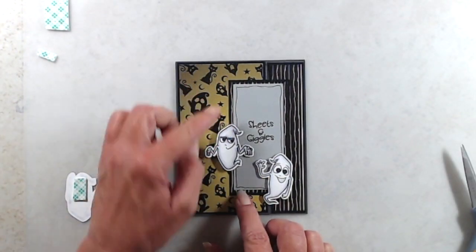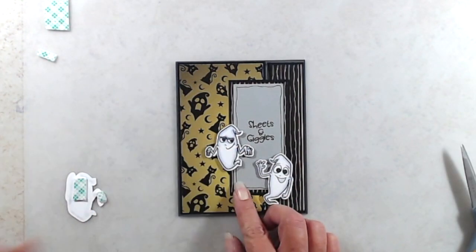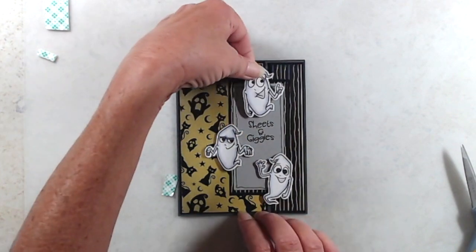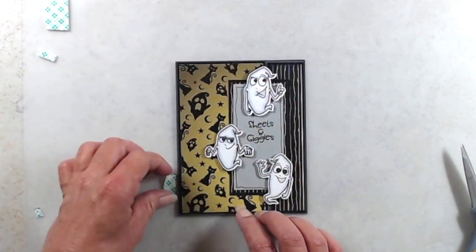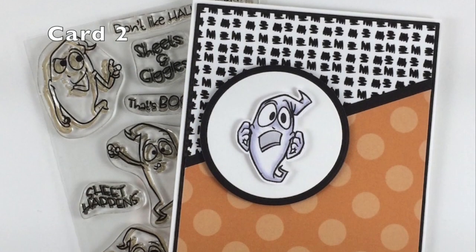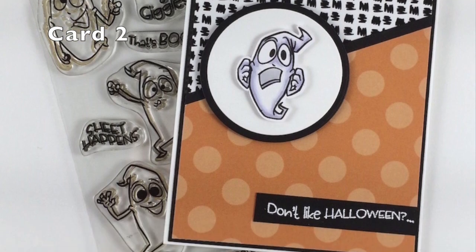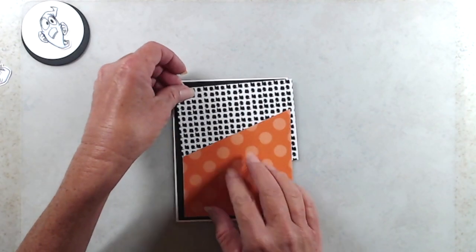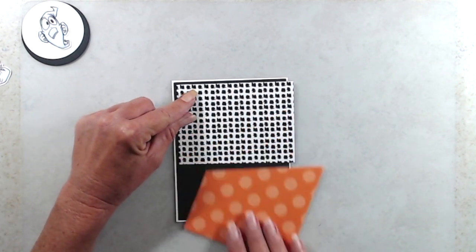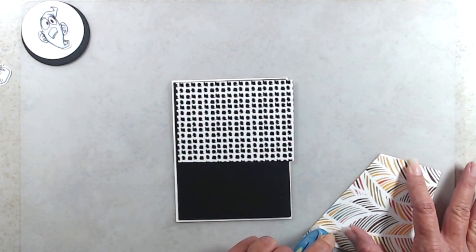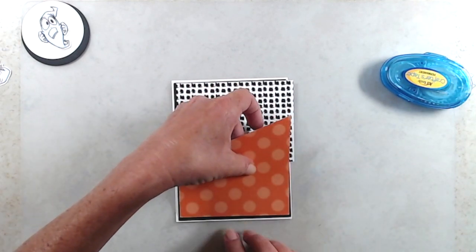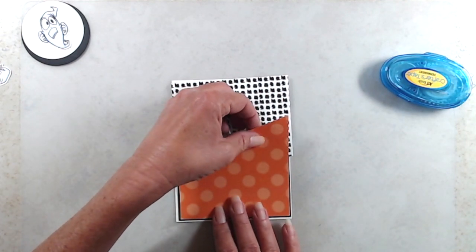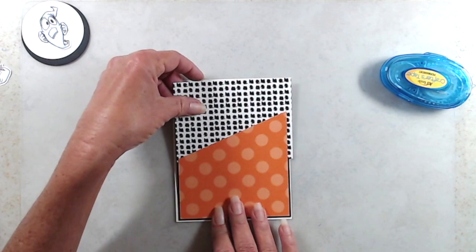For the second card, I colored the ghost the exact same way. What I wanted to share here is how I get my patterned paper so that it fits on the front of a card. The orange polka-dot paper is from the giraffe pack, and I had cut that to 4 inches by 5 1/4, and then I cut it at an angle so that I could put the black and white patterned paper, which is also from the Starring Hearts paper pack, up at the top.